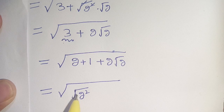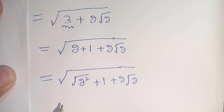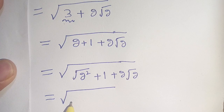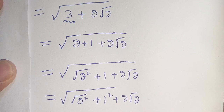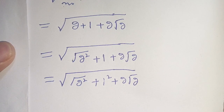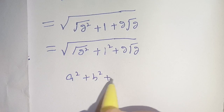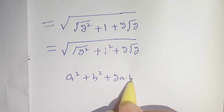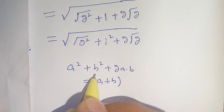So it is the same as square root of 2 plus 1 plus 2 square root of 2. In the next step, we can write this as square root of 2 squared plus 1 squared plus 2 times square root of 2. Now it is in the form of a squared plus b squared plus 2ab, which equals a plus b whole square.